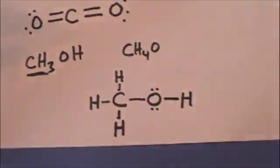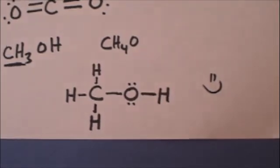Two, four, six, eight valence electrons. This is the Lewis dot structure for methanol.